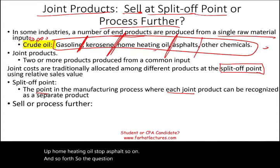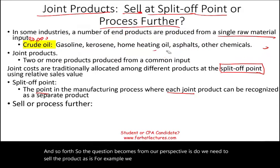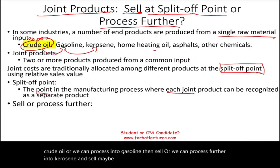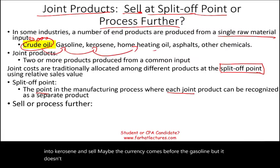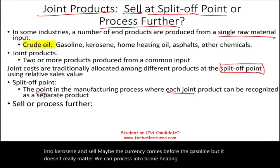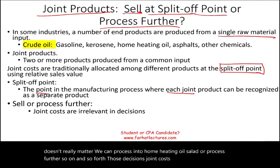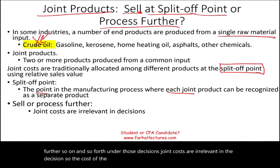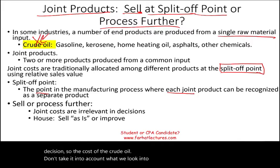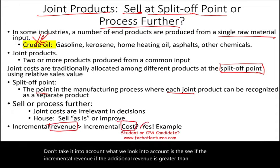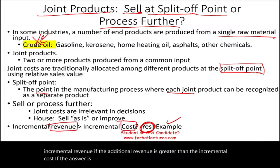The question becomes: do we need to sell the product as is, or process further? For example, we can sell the crude oil as is, or process it into gasoline and sell, or process further into kerosene, home heating oil, and so forth. Under those decisions, joint costs are irrelevant. What we look at is whether the incremental revenue is greater than the incremental cost. If the answer is yes, we process further.